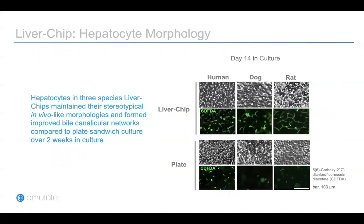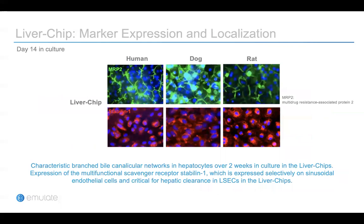We characterized the co-culture liver chip containing hepatocytes and LSECs for three species models first. After two weeks in culture, you can see stereotypical hepatocyte morphology and bile canalicular network based on the MRP2 efflux assay using CDFDA in all three species hepatocytes in the liver chip system. However, the same cells cultured in static 2D sandwich culture failed to maintain healthy morphology and bile canalicular formation, which is a well-known limitation of 2D hepatocyte culture for long-term study. We further confirmed the characteristic branched bile canalicular network using MRP2 transporter staining for hepatocytes, and selective sinusoidal endothelial cell marker — multifunctional scavenger receptor staining — for LSECs for all species models after two weeks in culture.